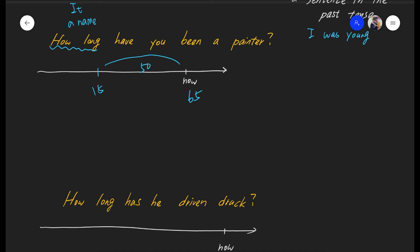And we know that we use for with the period of time. So it's for 50 years, right? So my reply to this question is, I have, remember to use the verb past participle, been a painter for 50 years. So that's how you respond to that particular question.